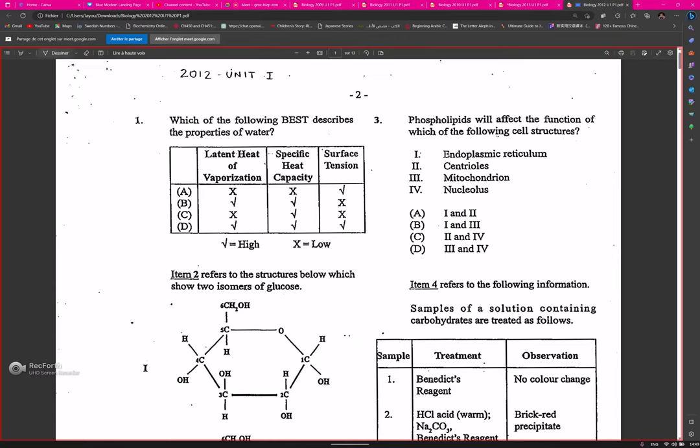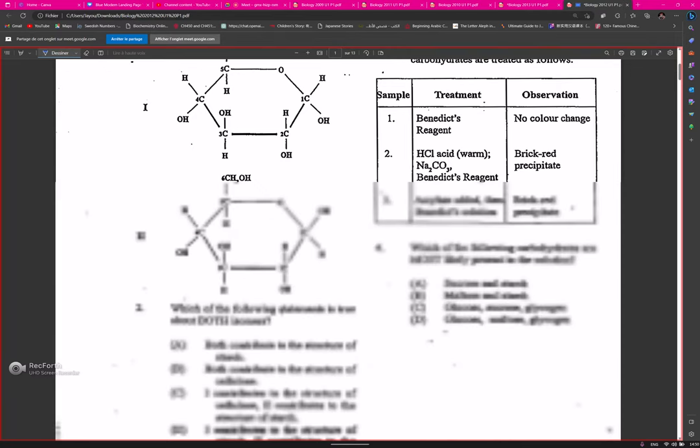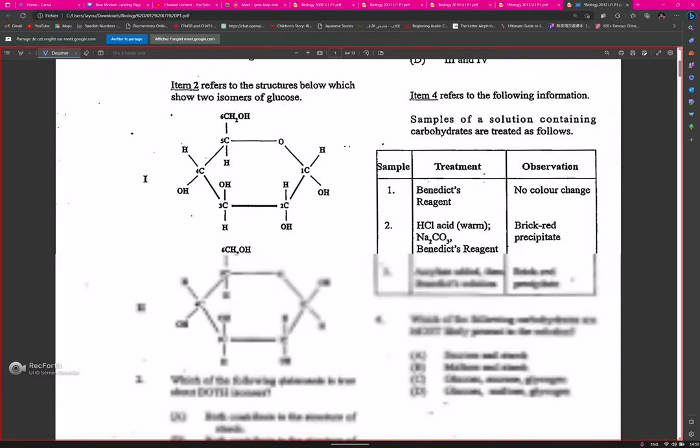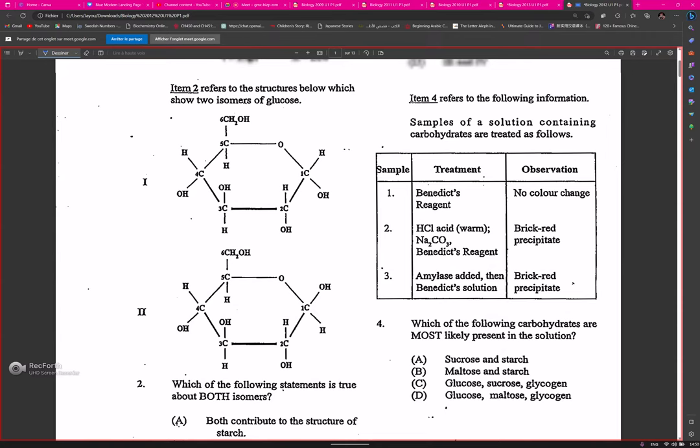Question two asks which type of glucose are shown. One is alpha and two is beta. Remember that the hydrogen is above on the anomeric carbon, so alpha above and beta below. That's how I used to remember it.